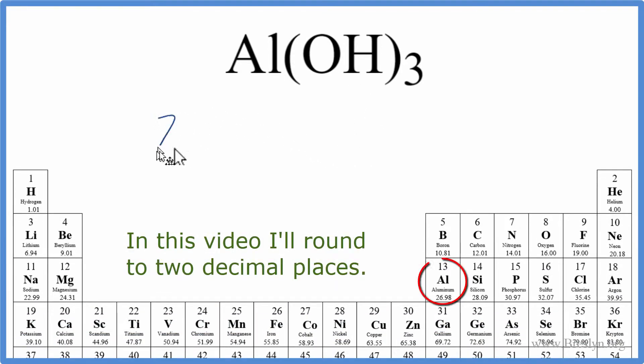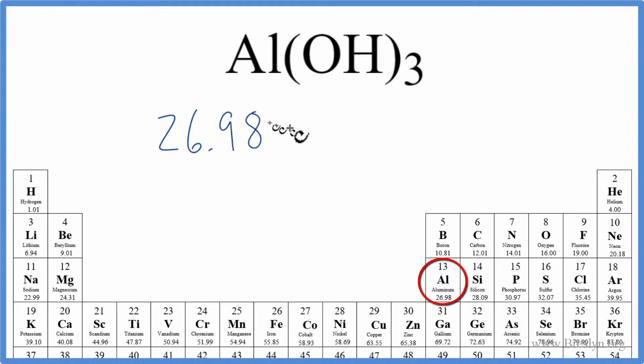Aluminum has a mass of 26.98, and that's grams per mole, but we'll write that at the end. We'll add to that everything here in the parentheses times 3. So this OH, we'll add that up and then multiply it times 3. Let's just put parentheses like this.